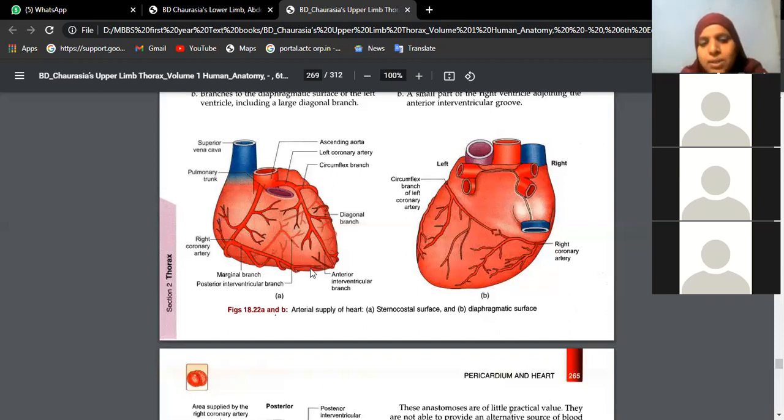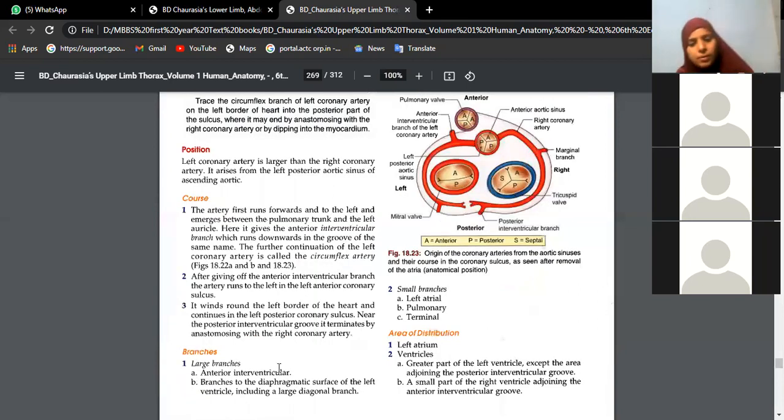The other branches, one is along the margin, that is the lower border of the heart, the inferior border. You are finding marginal artery. Further course, when it is going behind, you are finding it is continuing as posterior interventricular artery and forming an anastomosis with the left coronary artery. So that is all about right coronary artery. That finishes our question paper.